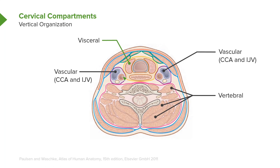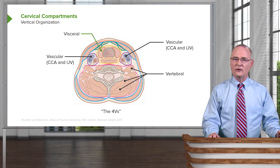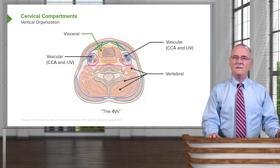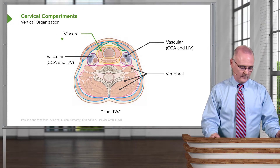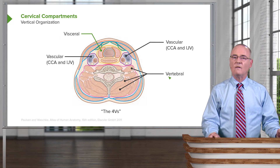The fourth compartment is referred to as the vertebral compartment, containing structures associated with this region of our anatomy. We can see various vertebral muscles identified by multiple leader lines. When we sum everything up, we can characterize the cervical compartments as the four Vs: one visceral, two vascular, and the fourth V being the vertebral compartment.